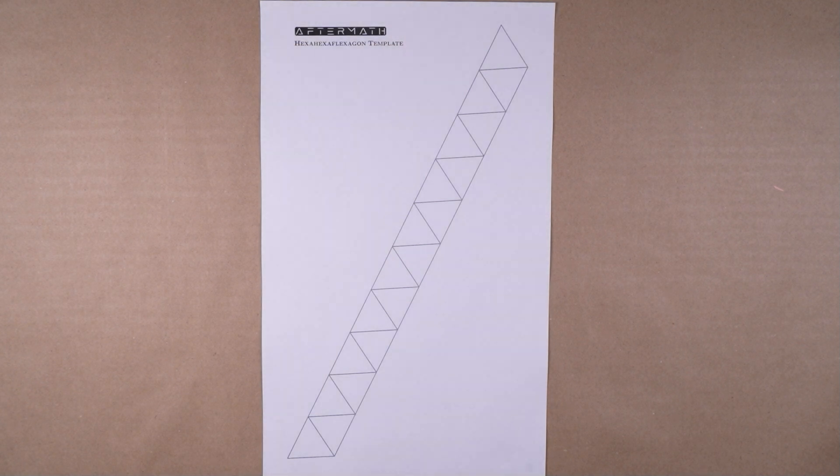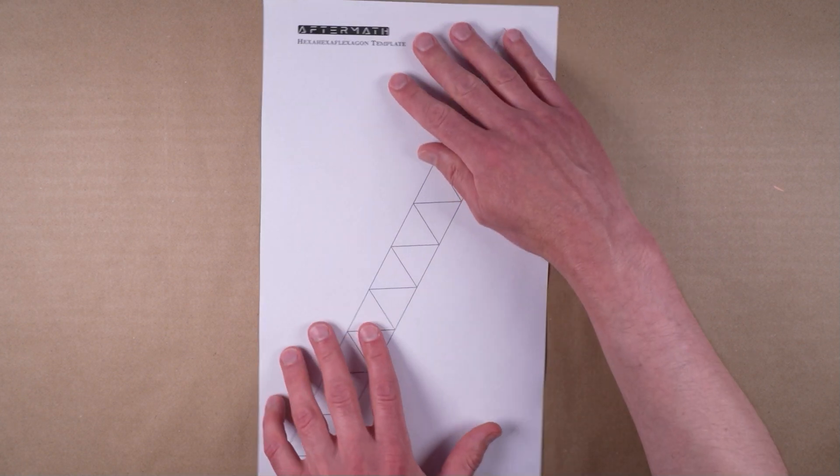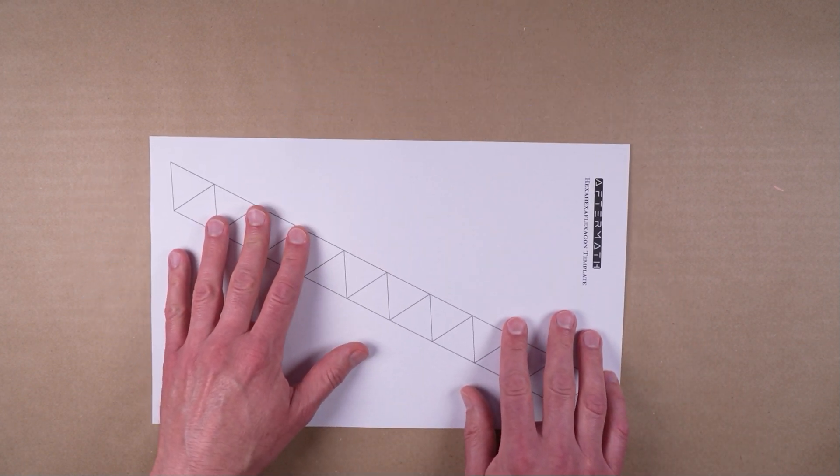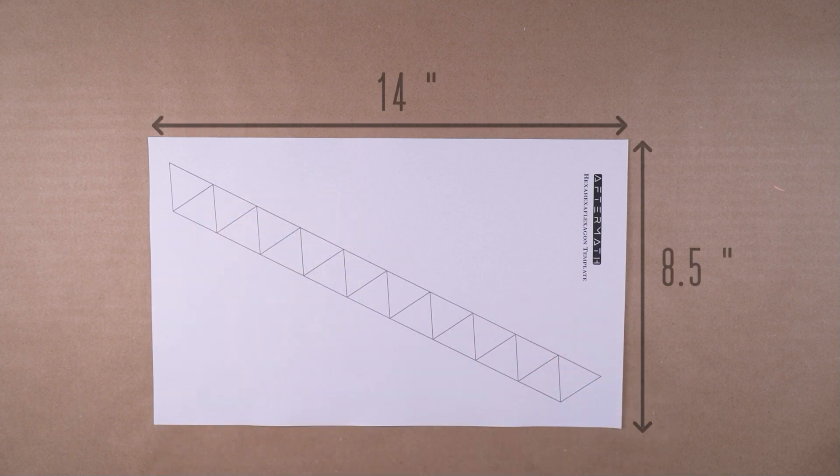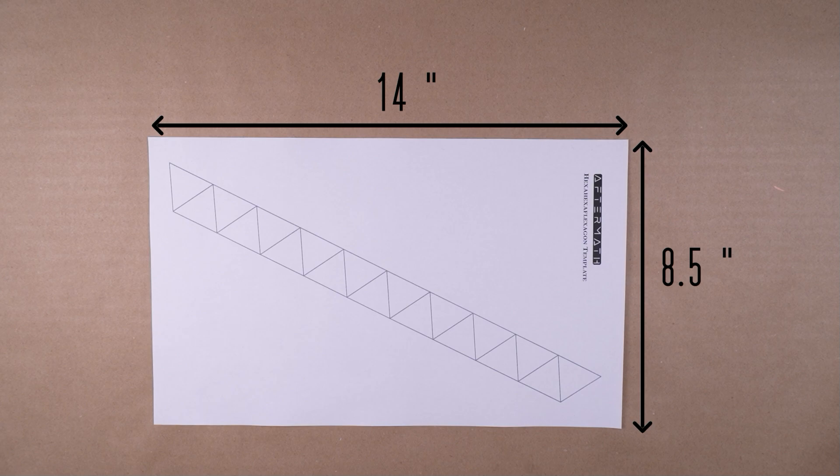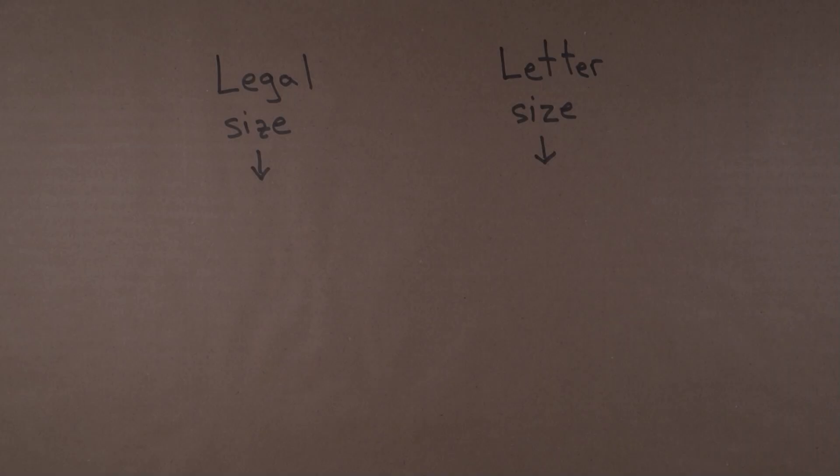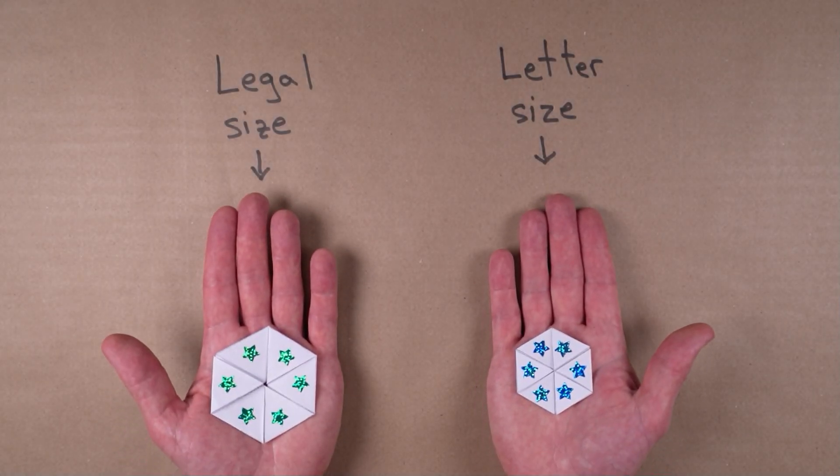To begin constructing a hexahexaflexagon, use the link in the description to download and print the hexahexaflexagon template on regular 8.5 x 14 inch legal sized paper. Standard letter sized paper can also be used if necessary, although the result may be undesirably small.